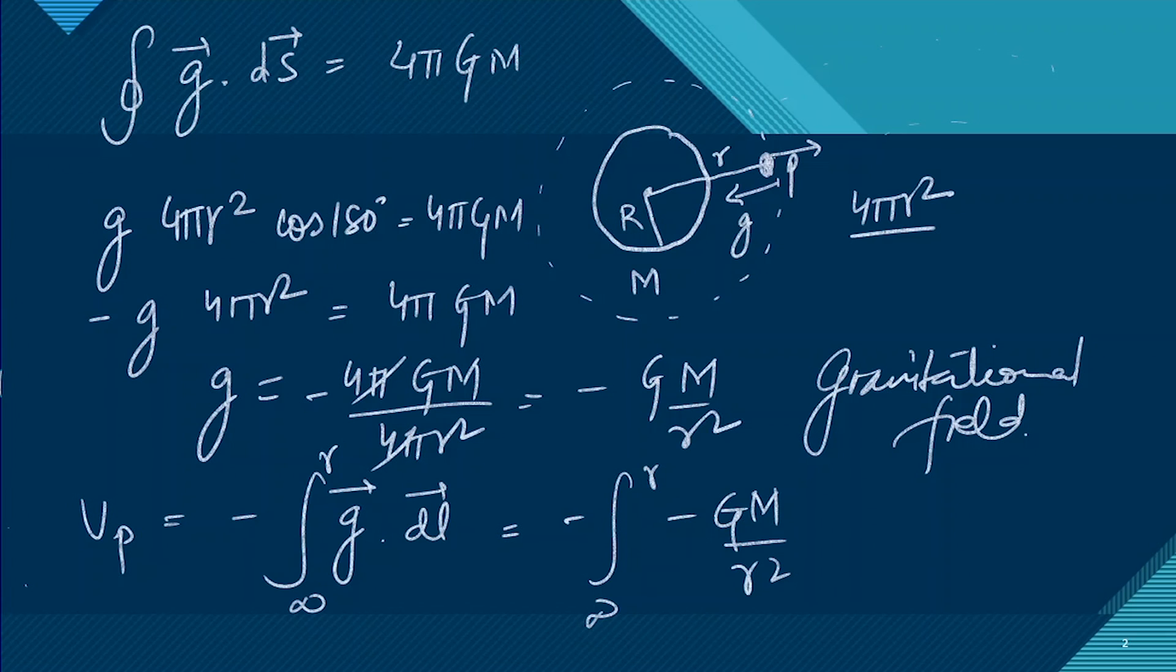We know that the gravitational potential at infinity will be zero, so we just have to put the gravitational field expression which we found. This is minus GM/r², and this is dr. The negatives cancel out, so this becomes GM integral from infinity to r of dr/r².